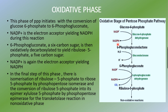Once NADPH is formed, 6-phosphogluconolactone is produced. This 6-carbon sugar is then oxidatively decarboxylated to yield ribulose-5-phosphate, a 5-carbon compound. The whole step of conversion of glucose-6-phosphate into ribulose-5-phosphate constitutes the oxidative phase. Two steps occur: a dehydrogenase step and then a decarboxylation combined with another dehydrogenation step. As a result, two molecules of NADPH are released, and notably, no ATP is produced.